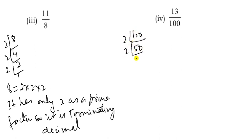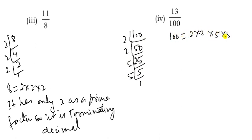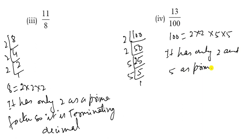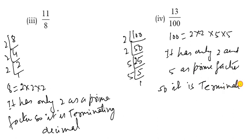Now the denominator is 100. Finding the prime factors: 100 = 2 × 2 × 5 × 5. It has only 2 and 5 as prime factors, so it is a terminating decimal.